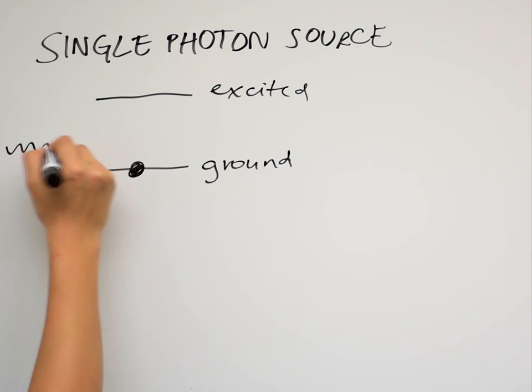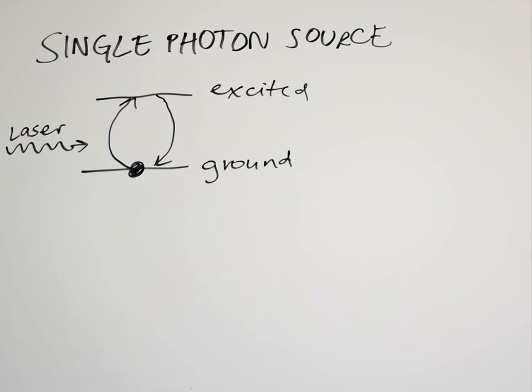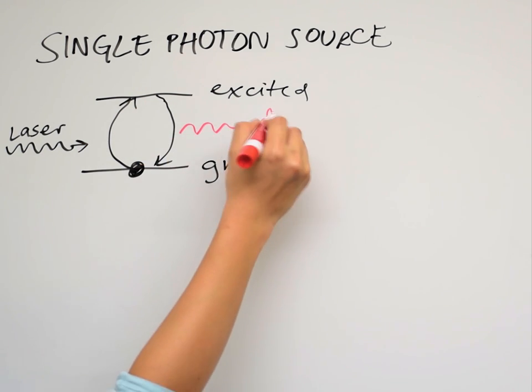Beginning with this system in its ground state, then excited by a short pulse, it returns to its ground state by emitting a single photon.